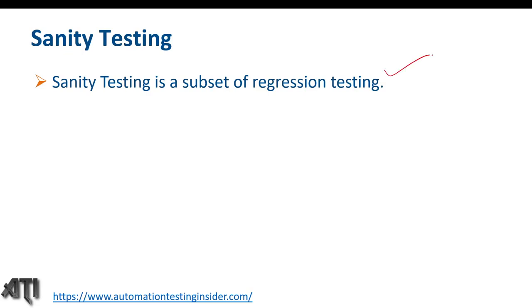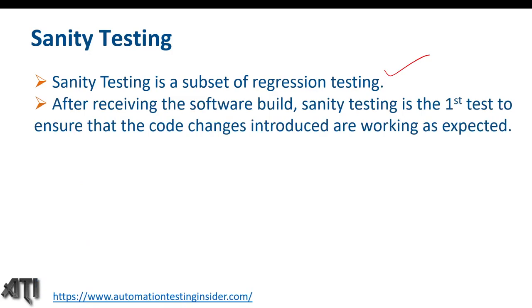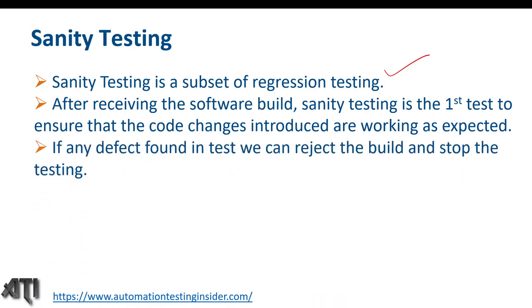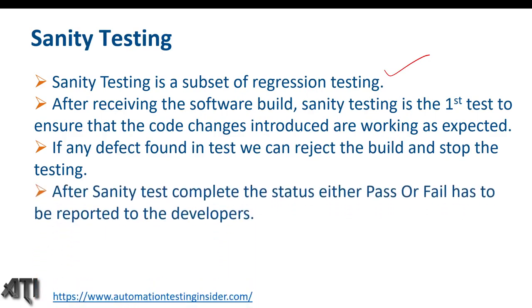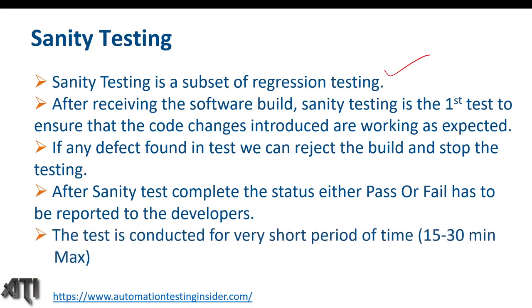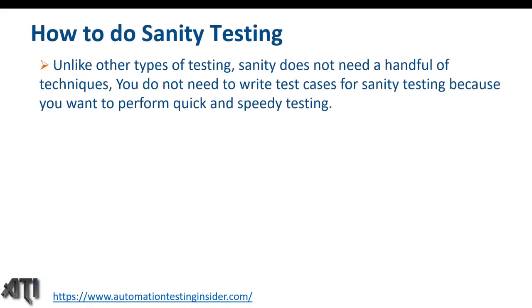Sanity testing is a subset of regression testing. After receiving a software build, sanity testing is the first test to ensure that code changes are working as expected. If a defect is found we can reject the build and stop testing. The result — pass or fail — is reported to developers. The test is conducted for a short period, say 15 to 30 minutes. Unlike other testing types, sanity does not require formal techniques — it's speedy and quick, and no test cases need to be written.